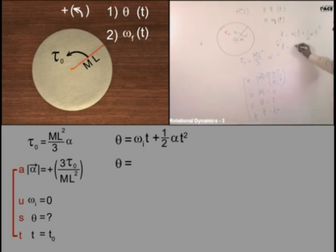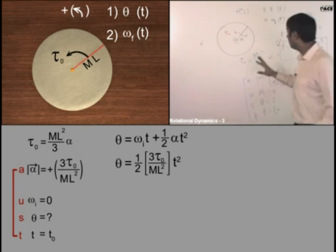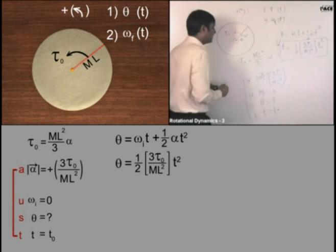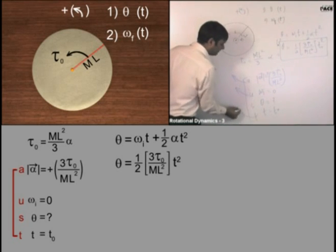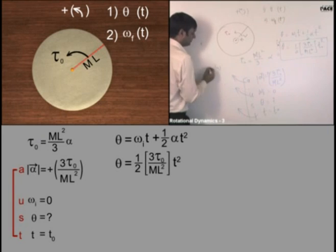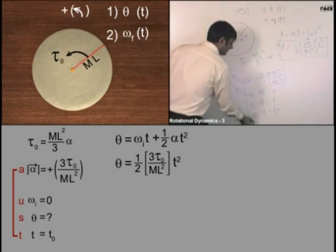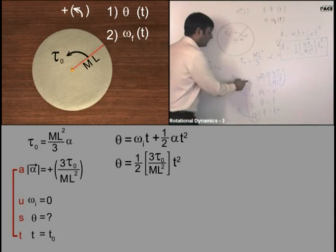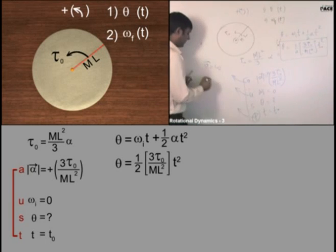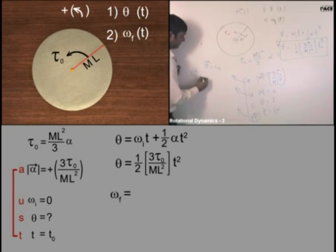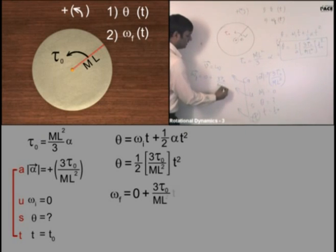Putting the values: theta equals 0 plus half alpha t squared. For the final angular velocity, I know omega initial, alpha, and time t. Using v = u + at in rotational form: omega final equals omega initial plus alpha t, which gives omega final equals 3 tau naught by ML squared, multiplied by t.